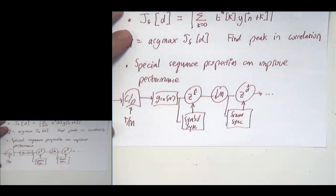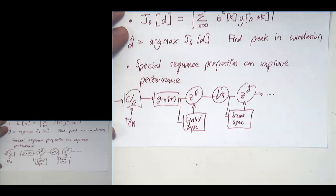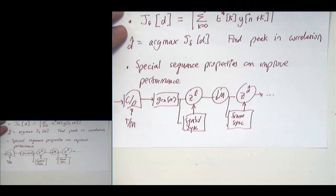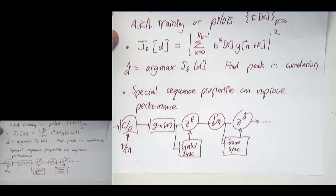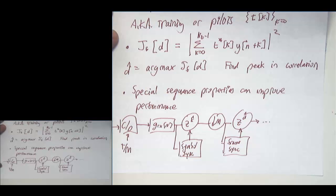The frame synchronization block will be further developed in subsequent lectures with a more robust solution. This simple correlator approach is intuitive but basic. We'll put together a more complete solution in a few lectures using least squares, which will enable joint channel estimation and frame synchronization.